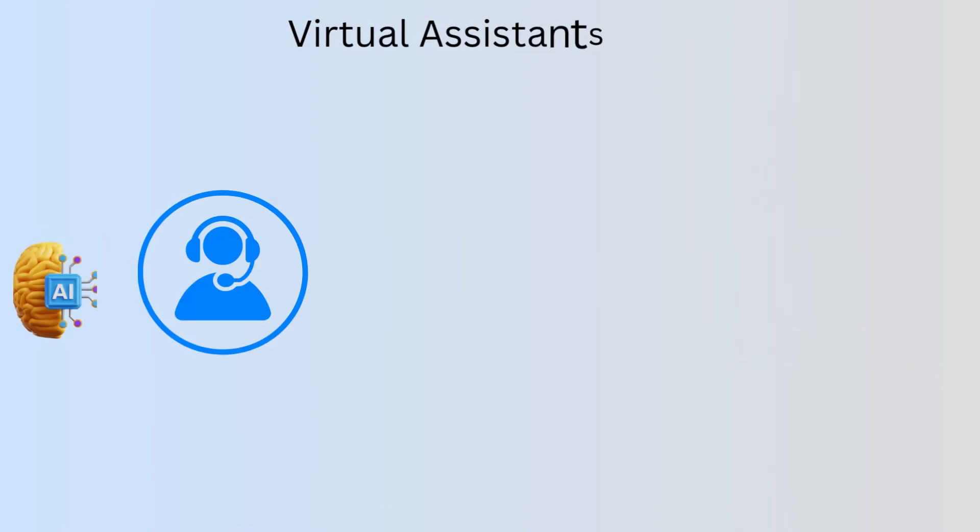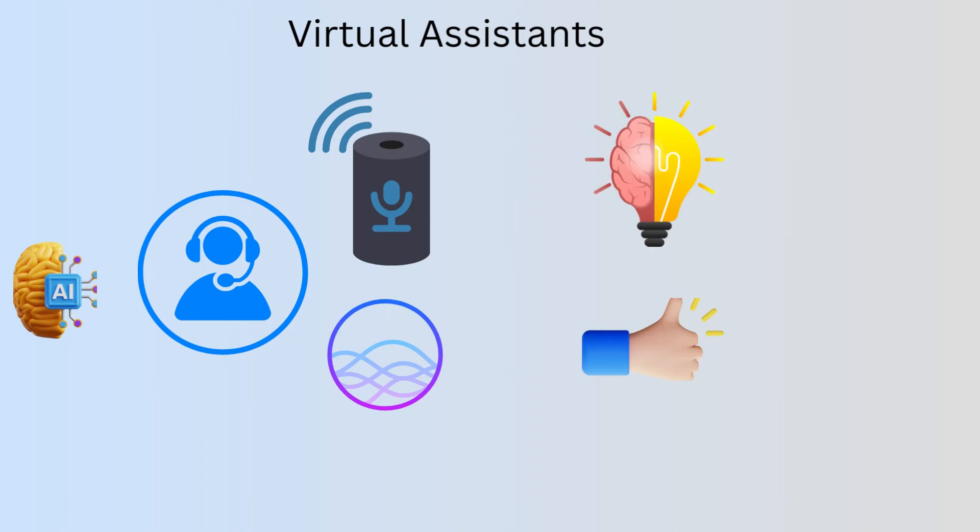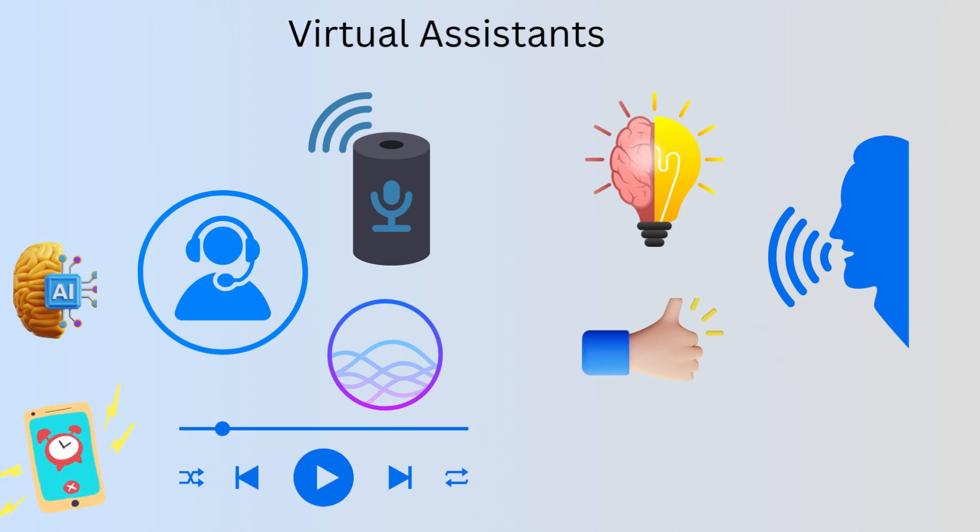AI is used to power virtual assistants like Siri and Alexa. These assistants can understand and respond to human speech, and they can perform tasks like setting alarms, playing music, and making phone calls.